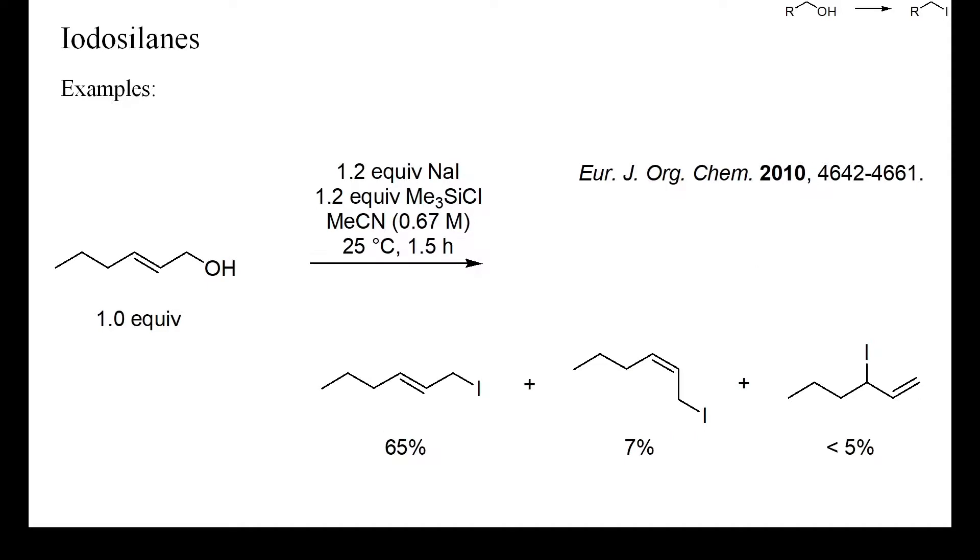In this more recent example, an allylic alcohol was converted to the corresponding iodide. Because allylic alcohols form carbocations readily, only a slight excess of chlorosilane was required.